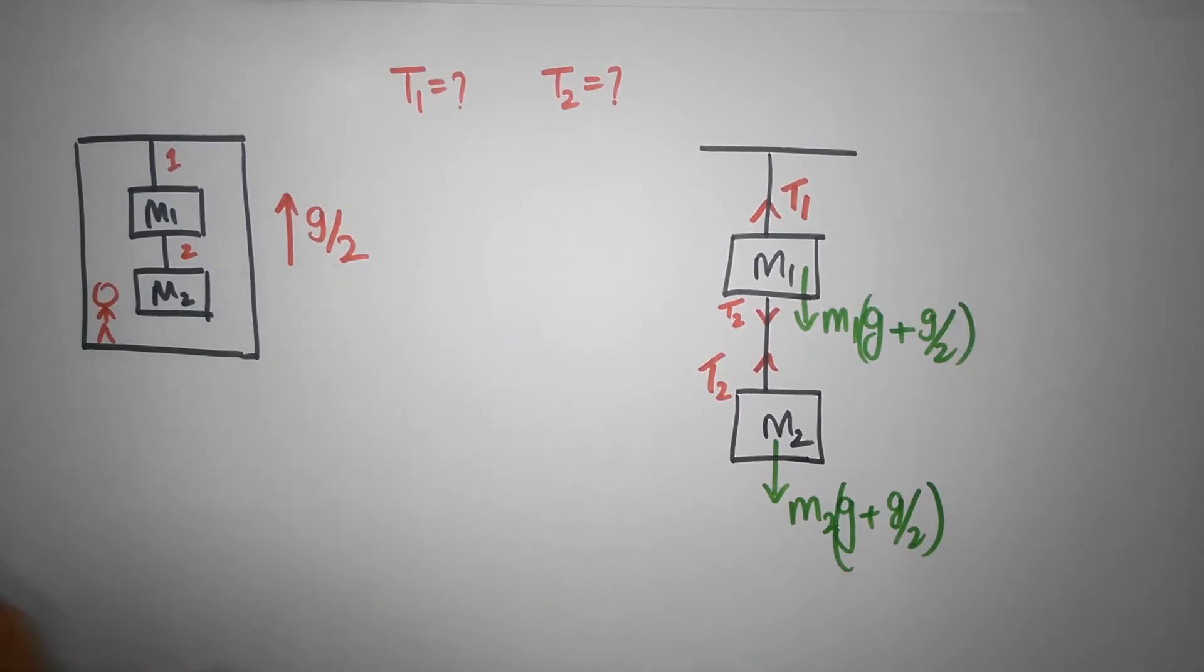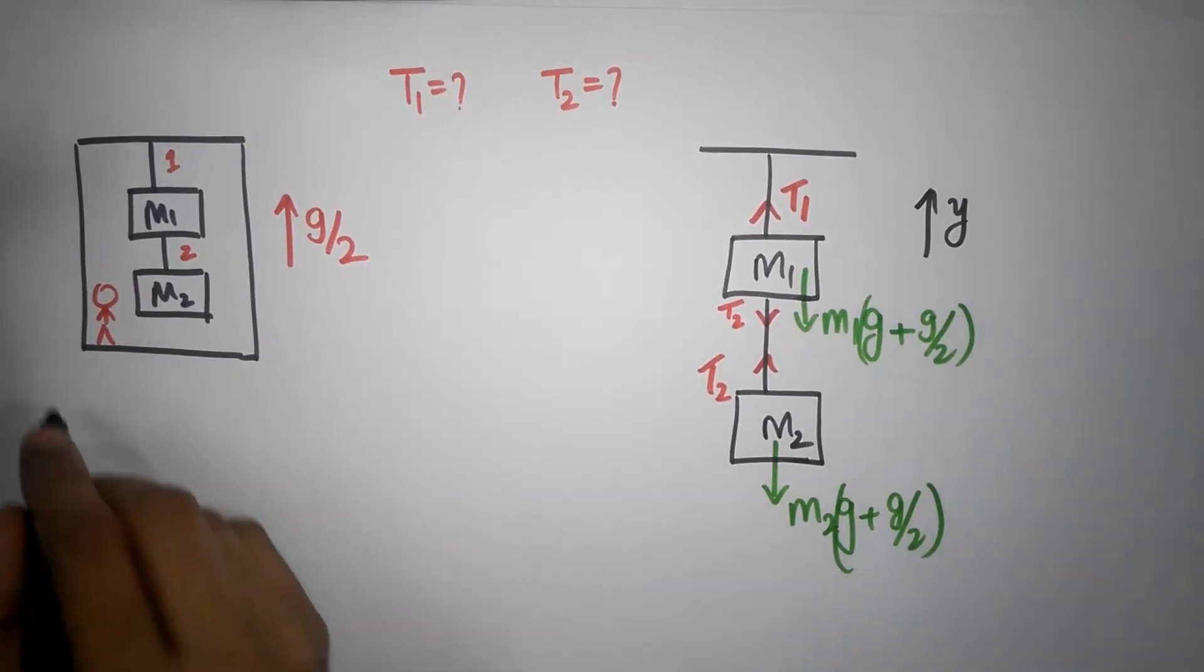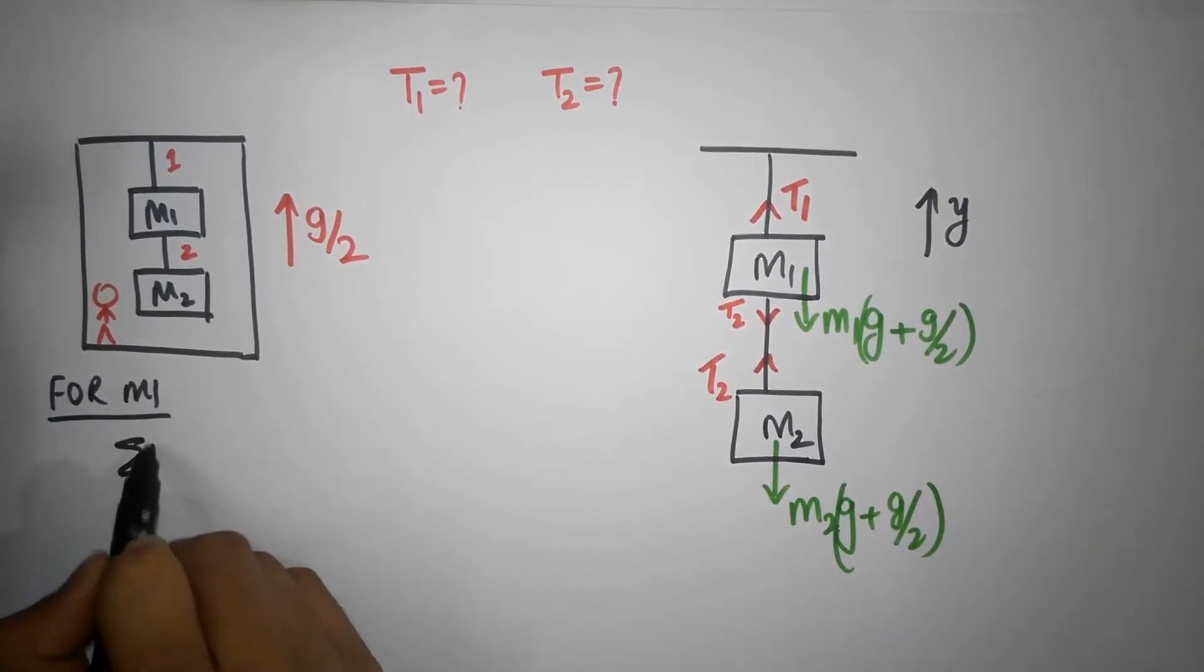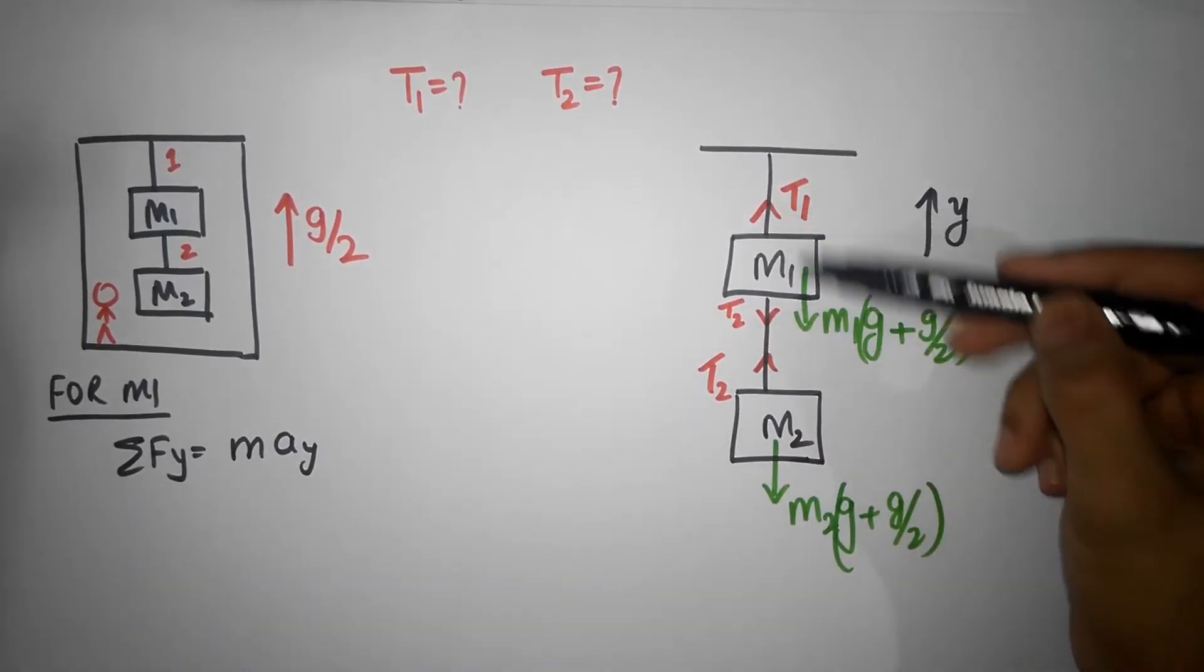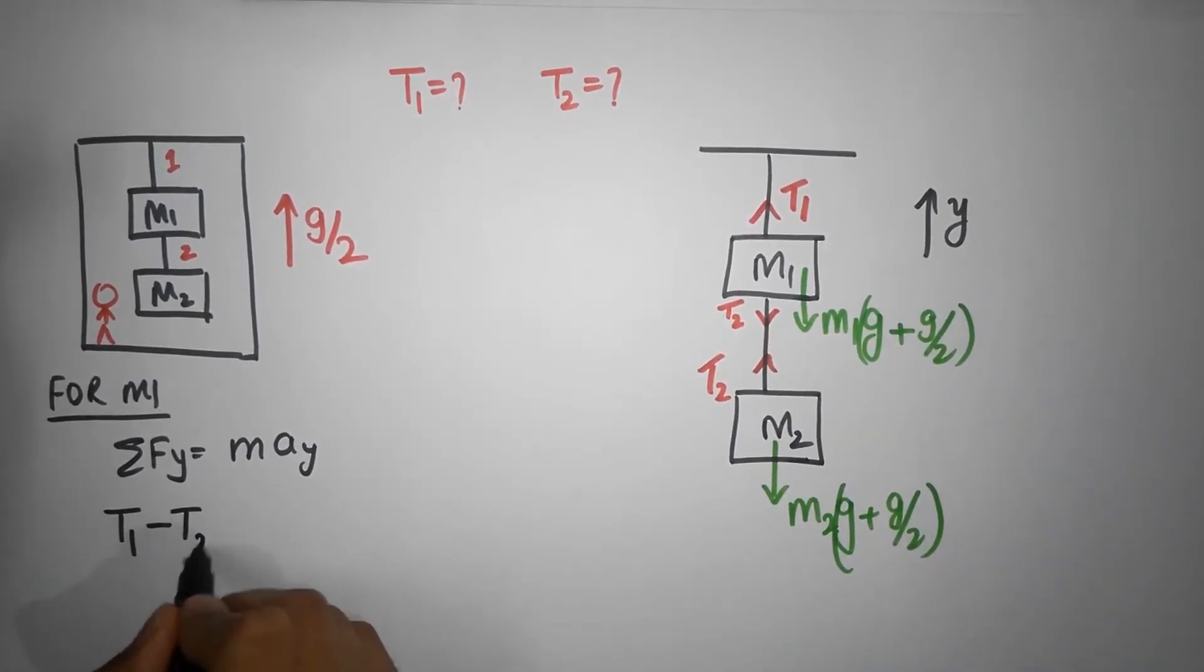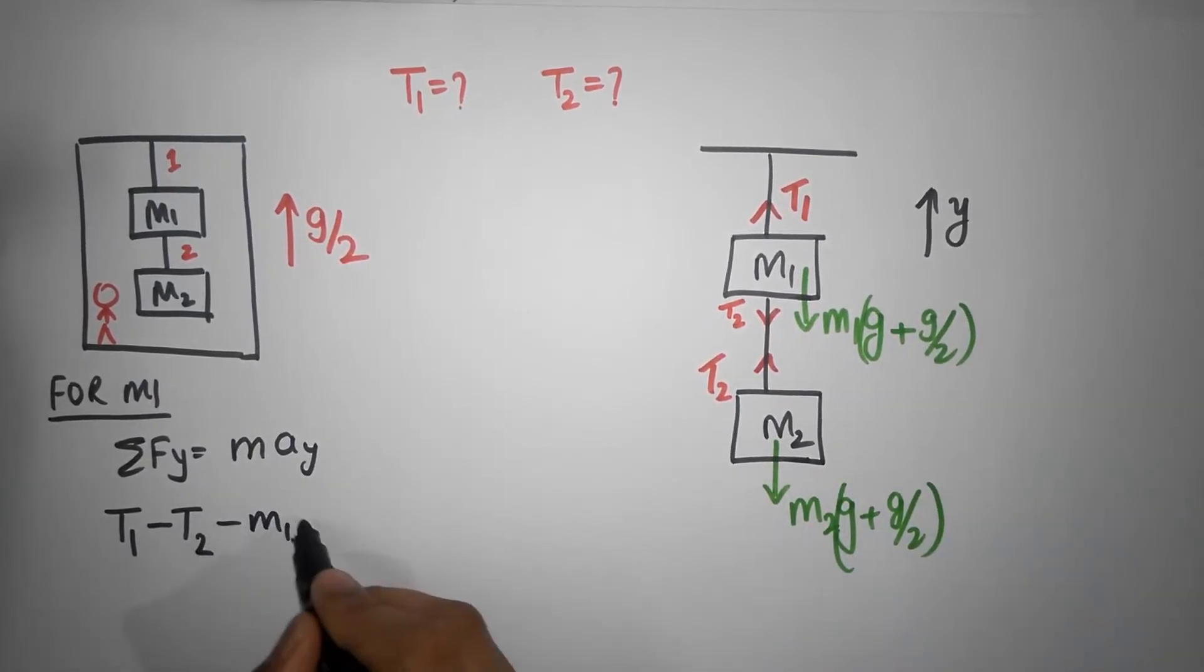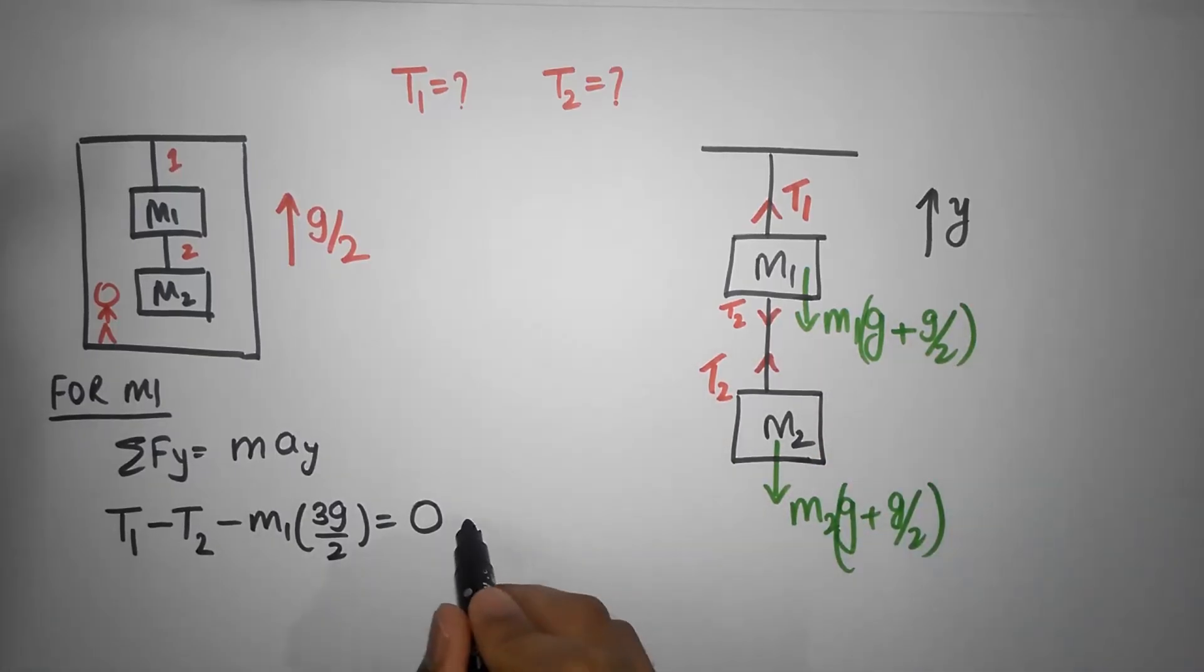Let's now apply Newton's second law to both these masses. I'm going to take upwards as positive. So for mass one, I will get Sigma f y equal to m a y. And the three forces acting: there's a tension force acting upwards, the tension force T2 acting downwards, and there's m1 times 3g by 2, so T1 minus T2 minus m1 into 3g divided by 2 should be equal to zero because from our point of view there are no accelerations. So this is going to be equation number one for us.